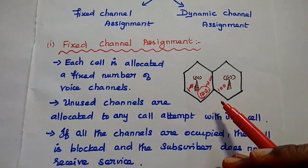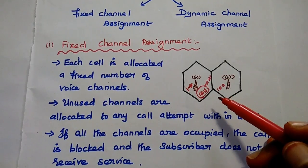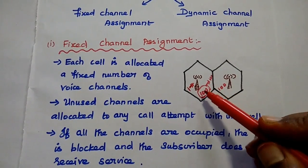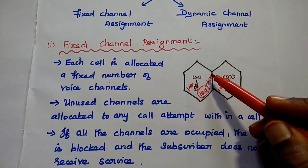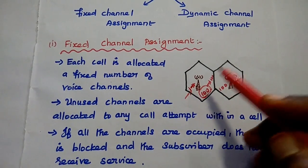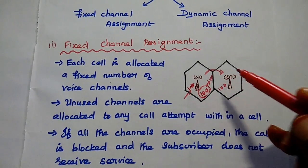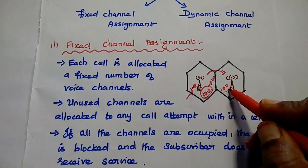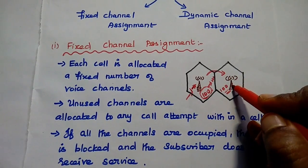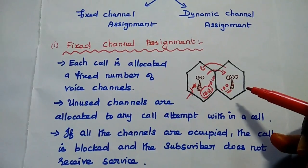That problem can be rectified by using the concept of borrowing strategy. Borrowing means: if all 100 channels in a cell are busy with users, for this additional user, the cell is going to borrow a channel from the neighboring cell. So if there are any free channels available in the neighboring cell, they can be borrowed for this new user.